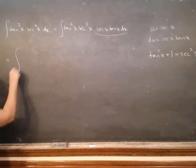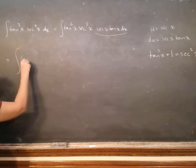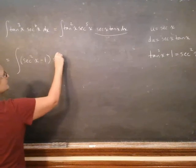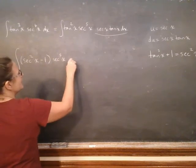So that means tangent squared. That's not too bad, because that's just going to be secant squared minus 1. Then I have secant to the 5 and then I have my du.